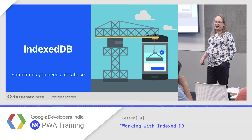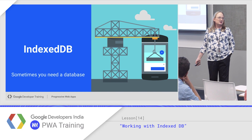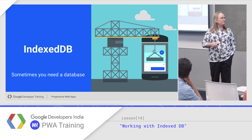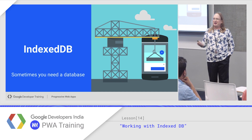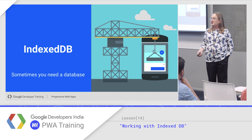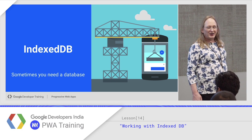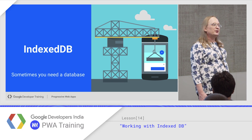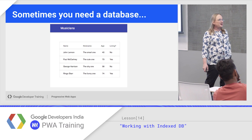Let's talk about IndexedDB. You need a database sometimes for your application, something to store some dynamic data. IndexedDB is what we get now with progressive web apps. There is an older database called WebSQL, but for various reasons it was deprecated in favor of IndexedDB. So sometimes you need just a database to store some data.